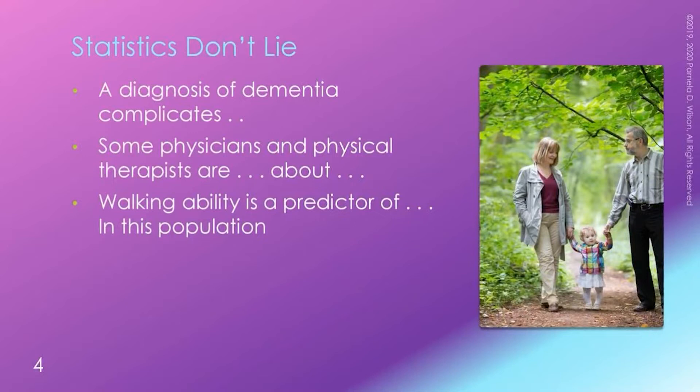Statistics don't lie. Statistics indicate the known risks that are more specific to care for older adults with dementia. The Alzheimer's Association confirms that 32% of people over age 85 are diagnosed with Alzheimer's, but many of these individuals also have vascular dementia, which relates to heart disease and circulatory issues.